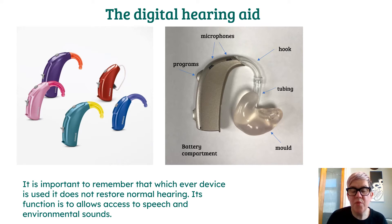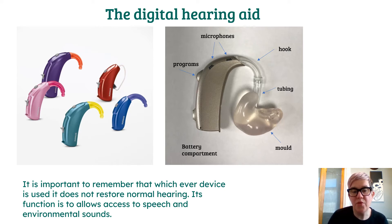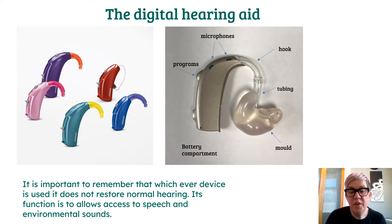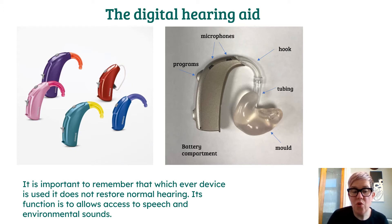On some hearing aids we have programs. Most of those now will change to different environments automatically, so you don't have to worry too much about that button. Down here we have the battery compartment, which is generally the on/off switch as well. You can hook it open to reveal the battery, and it also serves as the on/off switch.